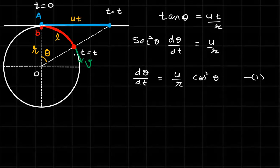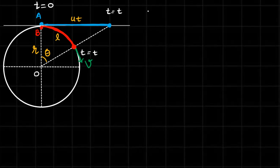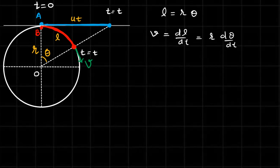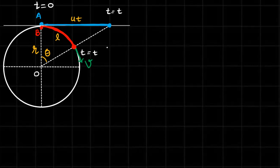By the time B reaches its position, it has traveled distance l along the circle. That arc length l = rθ, where theta is measured in radians. The velocity of particle B is dl/dt = r·(dθ/dt). Substituting the value of dθ/dt, we get v_B = r · (u/r)·cos²θ, so the linear speed of B is v_B = u·cos²θ.